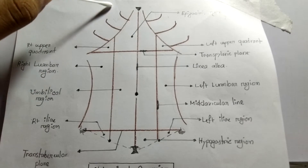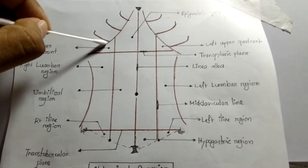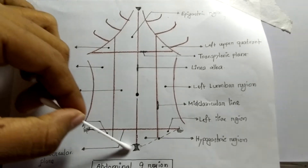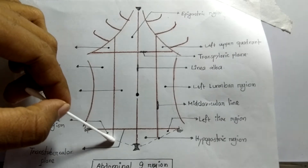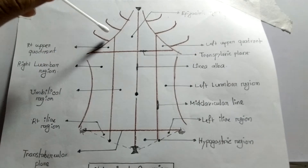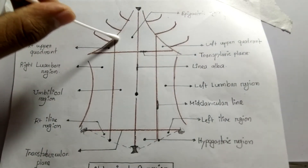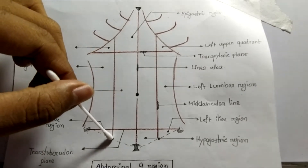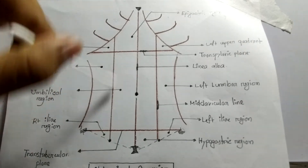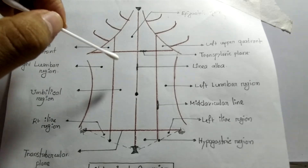Now there are two vertical lines — this is the mid-clavicular plane, which joins the middle of the costal cartilage to the midpoint of the inguinal ligament. So from the middle of the costal plane up to the midpoint of the inguinal ligament, there is a vertical plane. This kind of vertical plane is present on each side.